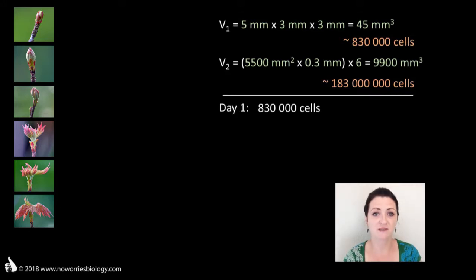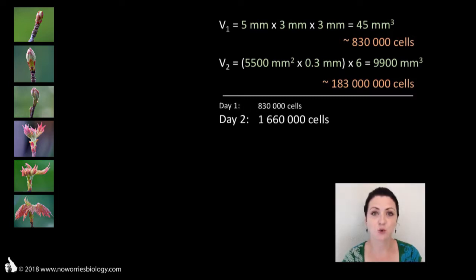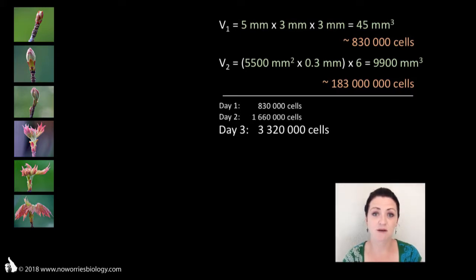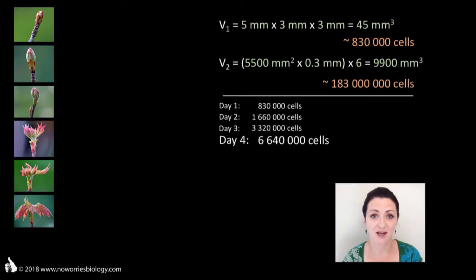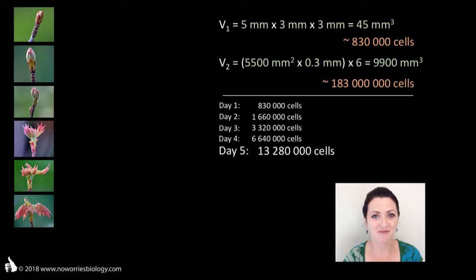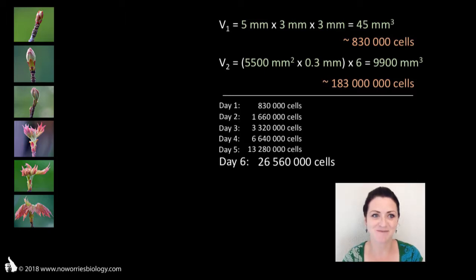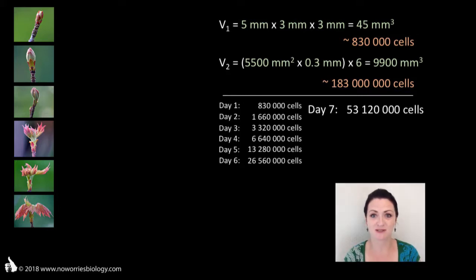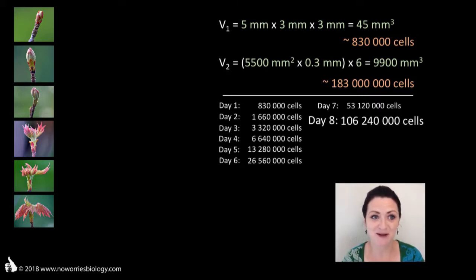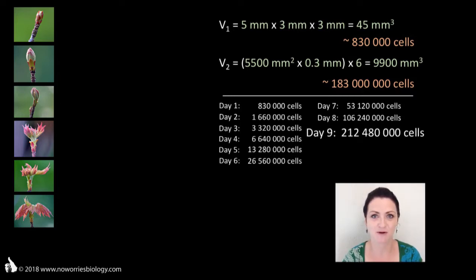On day 1 we would obviously have 830,000 cells. Day 2: 1,660,000 cells. Day 3: 3,320,000 cells. Day 4: 6,640,000 cells. Day 5: 13,280,000 cells. Day 6: 26,560,000 cells. Day 7: 53,120,000 cells. Day 8: 106,240,000 cells. Day 9: 212,480,000 cells.